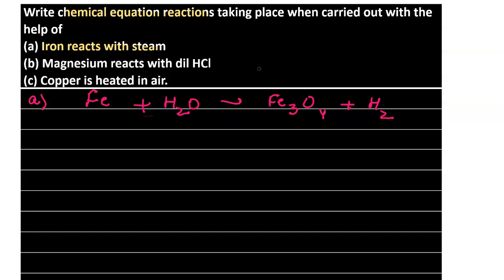Fe3O4 is actually a combination of FeO and Fe2O3, meaning iron is present in both +2 and +3 oxidation states. To balance the equation, we place 3 iron atoms on the left, then 4 water molecules to match the 4 oxygen atoms, giving 8 hydrogen atoms on each side. This gives us the balanced equation for iron reacting with steam.